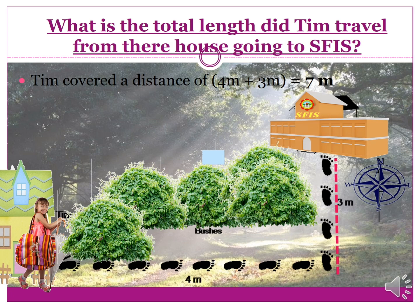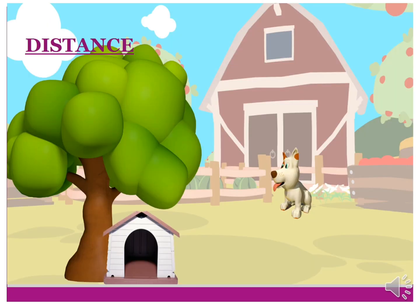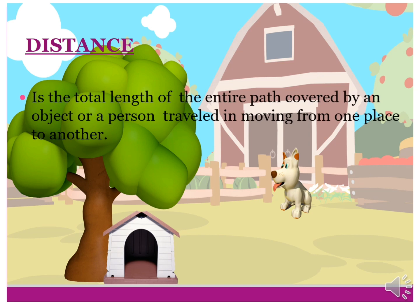Once again, let us look at the picture. What is the total length that teen traveled from their house going to SFIS? To find the total length, you have to look at the given. Based on the illustration, from west to east is 4 meters, and from east to north is 3 meters. So teen covered a distance of 7 meters. Remember, distance is the total length of the entire path covered by an object or a person traveling from one place to another.